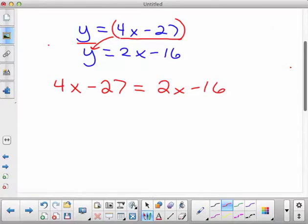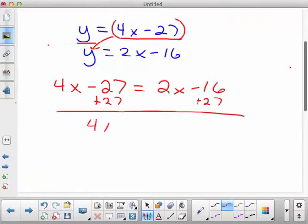So your next step then is to combine your x's and your constants. So I'm going to add 27 over to the right side to get those together.